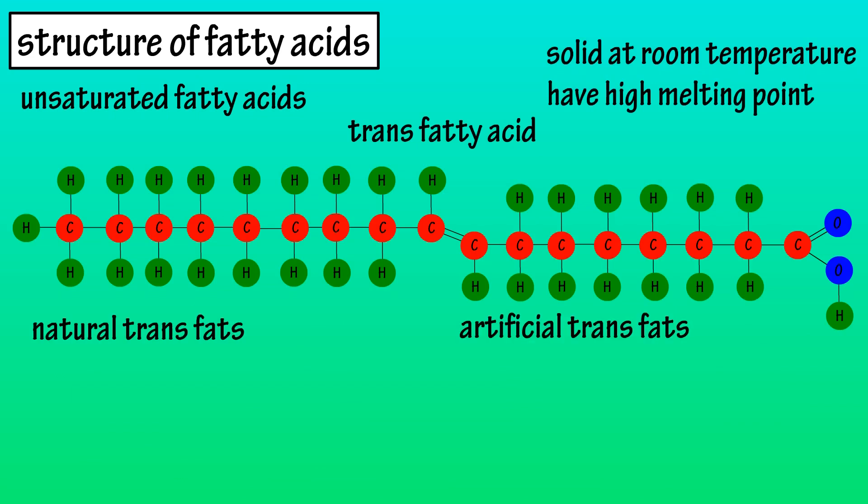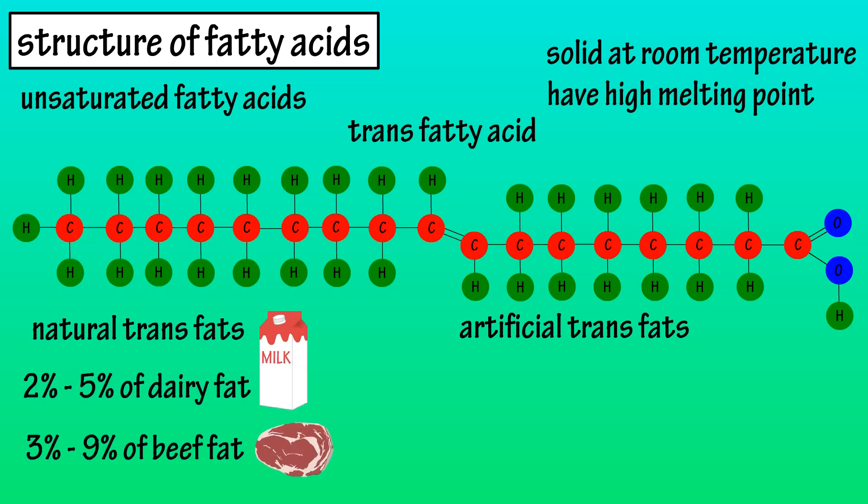There are natural and artificial trans fats. Natural trans fats, also known as ruminant trans fats, typically make up 2-5% of the fat in dairy products and 3-9% of the fat in beef and lamb.